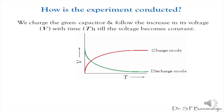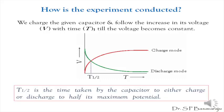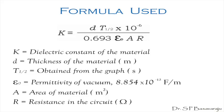Again we plot a graph of voltage V versus time T for this discharge case in the same graph as before. The curve obtained is called the discharge mode curve. The two curves intersect at a point which on the time axis is denoted as T-half, the half time. T-half is the time taken by the capacitor to charge or discharge to half its maximum potential. By knowing the thickness d and the area A of the dielectric strip inside the capacitor, we can find the dielectric constant using the formula: K = (d × T-half × 10⁻⁶) / (0.693 × ε₀ × A × R). We will learn about this formula later.